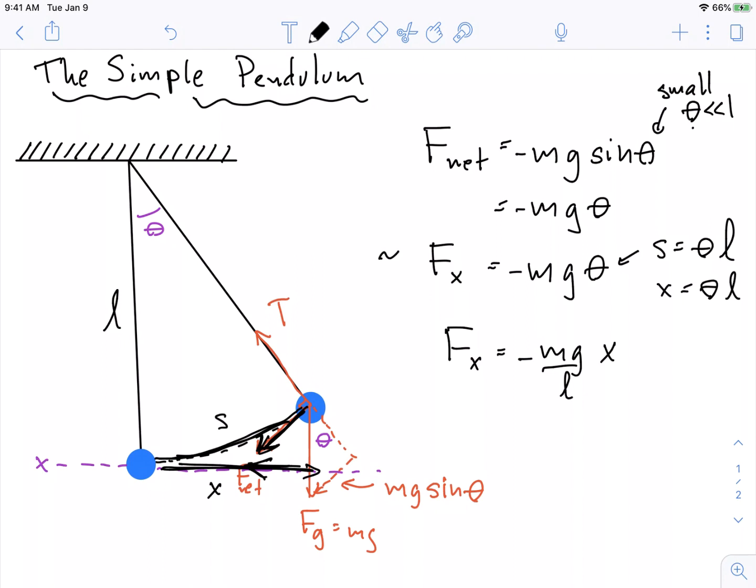So what do I have? I have Fx, which when the mass gets displaced to the side, some position x, then there's a restoring force that points in the direction opposite of x that wants to push the pendulum back to the middle. Okay, so this is a really important formula.